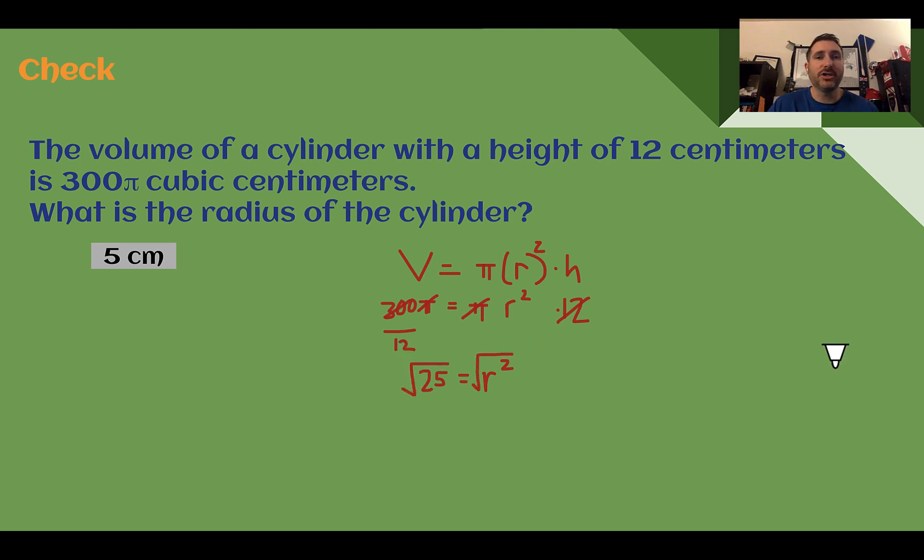And then since it's radius squared, thinking back to previous lessons where we wanted to solve for a variable to the second power, we take the square root. We saw this when we were doing rational and irrational numbers during the Pythagorean theorem. Square root gives you r. Square root of 25 is positive or negative 5, but radius is a distance, so we just want the positive number. Radius is equal to 5.